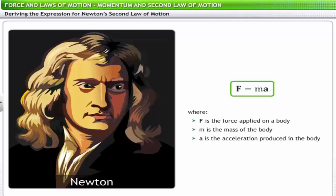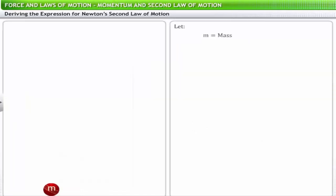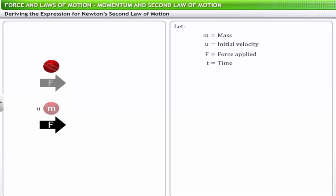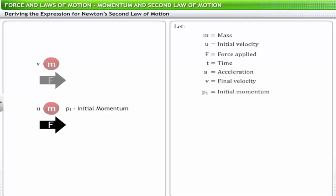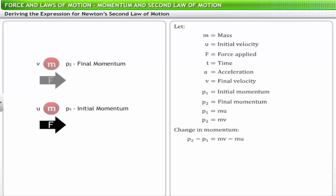Let's derive this relationship. Consider a ball of mass m having an initial velocity u. When a force of magnitude F is applied for time t, the ball moves with acceleration a and reaches a final velocity v. Let p₁ be the initial momentum (p₁ = mu) and p₂ be the final momentum (p₂ = mv). The change in momentum is p₂ minus p₁ equals mv minus mu, or m(v minus u).